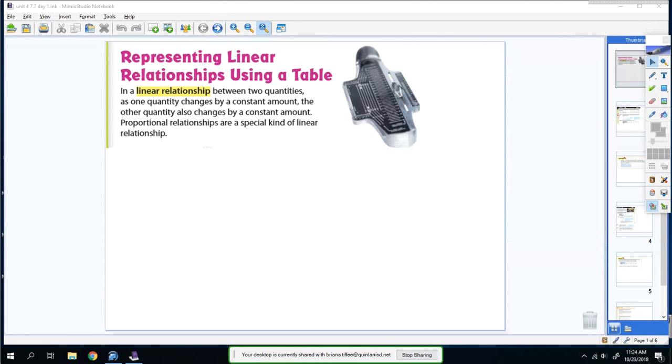Hey, so today we're going to be representing linear relationships using a table. In a linear relationship, as one quantity changes by a constant amount, the other quantity also changes by a constant amount.